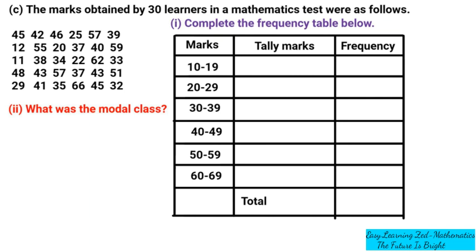We're looking for marks ranging between 10 and 19. In the first row there is no mark between 10 and 19. In the second row, the first number is 12 — I've ticked it in red — so we put a tally there. In the third row we have 11, so I tick it and put a tally as well. The fourth and fifth rows have none. So there are only two marks ranging between 10 and 19.